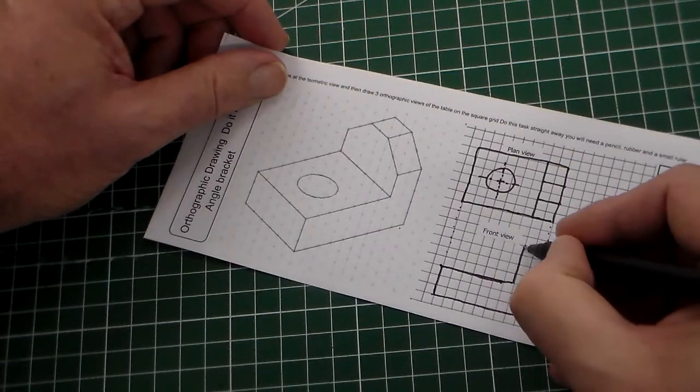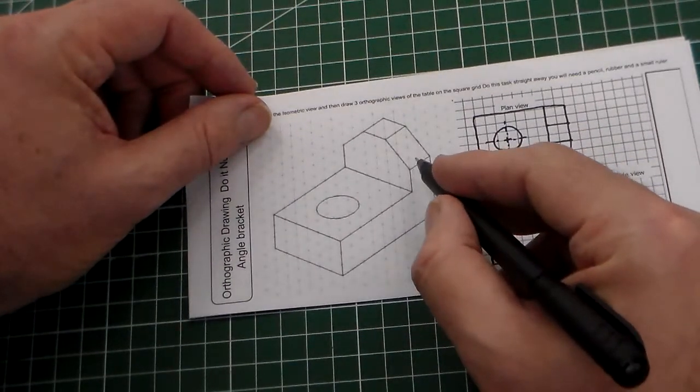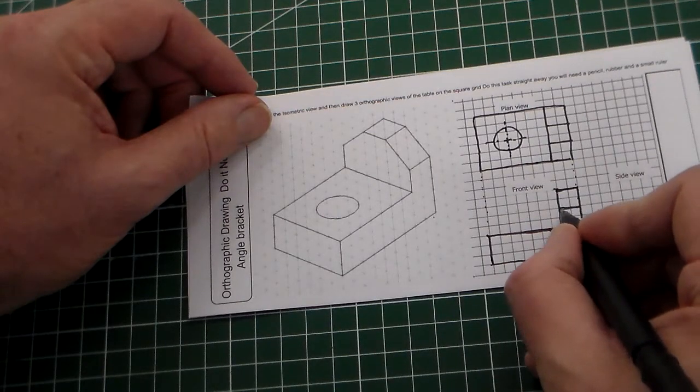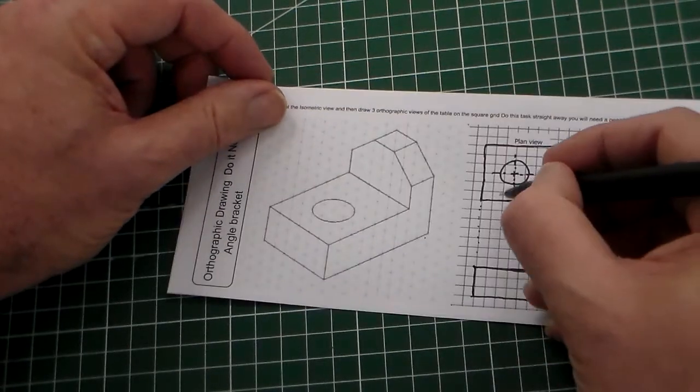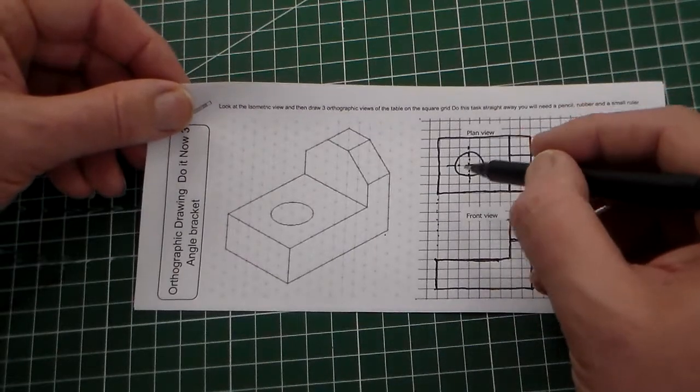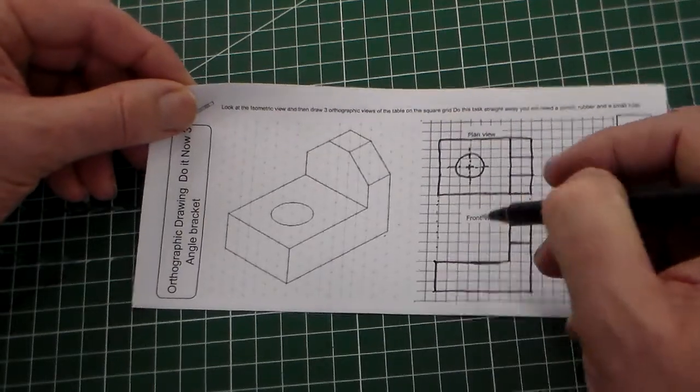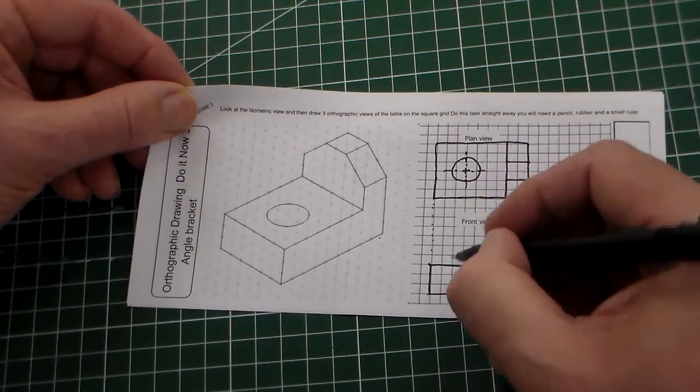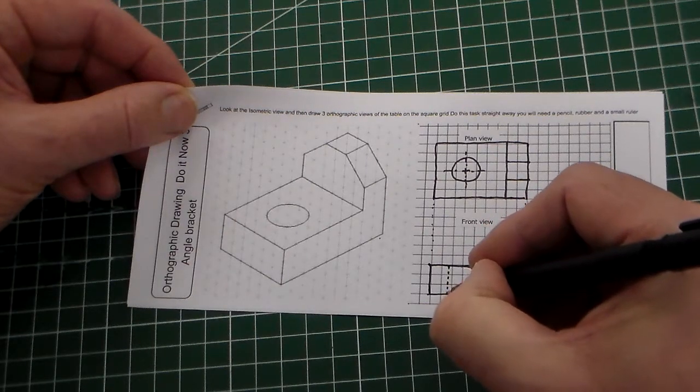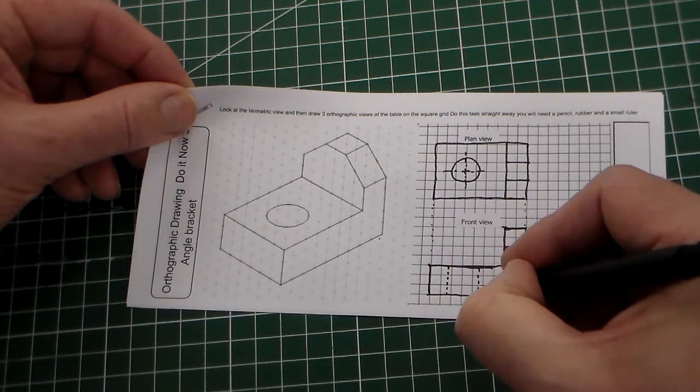We can see the L shape of the bracket here, and obviously we've got this detail here. There's the bracket, but what we do have to add is hidden detail. Because we've got this hole which we can see in the plan view but we can't see it in the front view, we can add dotted lines or dashed lines just like this, which indicate hidden detail.